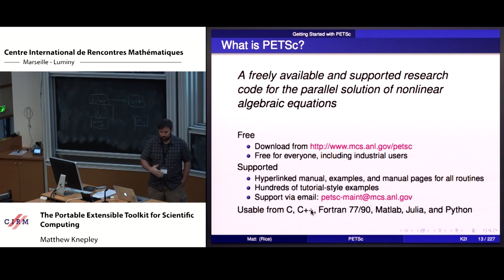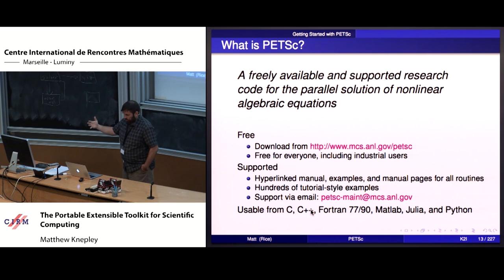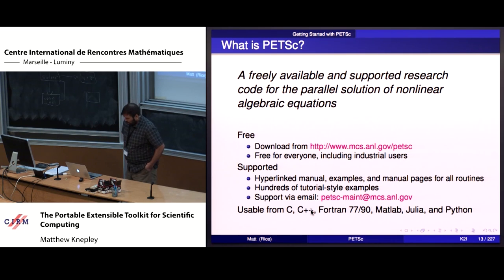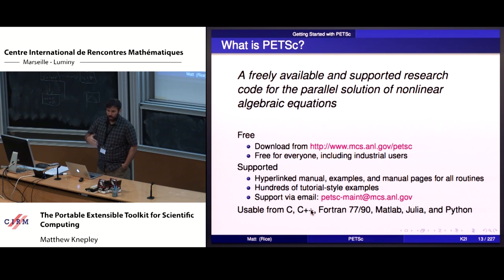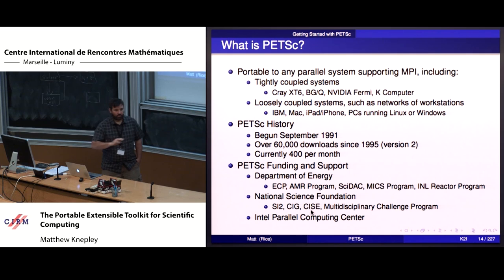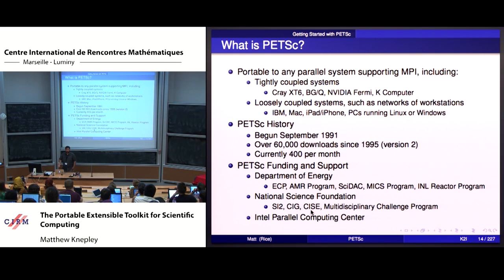PETSc is a set of libraries. It's freely available - you can even take it and sell it, it's totally within our license. Even industrial users who want to incorporate it in their code and not tell anyone - that's okay, and they do. It's got 24/7 support, bindings for many languages, and can run on essentially any platform. The only one I couldn't think of that we haven't run on is Raspberry Pi, but we should be able to since it runs Linux. I've run it on my phone and on every parallel machine we know of.